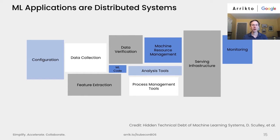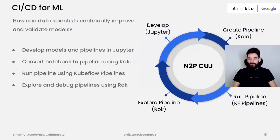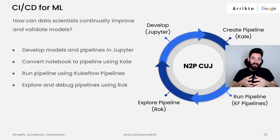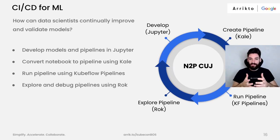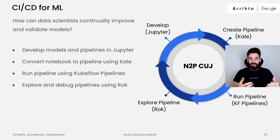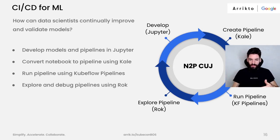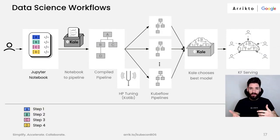I'm going to turn it over to Stefano. Thank you, Carl, for the great introduction to Kubeflow. Now that you have a general idea of the architecture and all the components it provides, you might wonder how you can use it to develop and continually improve and validate machine learning models using Jupyter Notebooks, Kale, Kubeflow Pipelines, and Rock. This is exactly what we're going to do in this tutorial — but first, let's have a high-level overview of the end-to-end workflow.